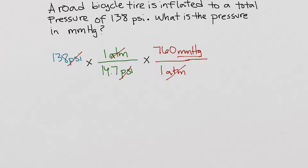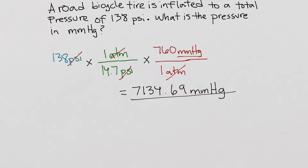Now let me do this calculation. I end up with 7134.69 millimeters mercury. There are different ways that an instructor will want you to write down this final value — it might just be a personal preference. Some would like it to stay like this, or some want it in scientific notation. If I leave this in three significant figures, I get 7.13 times 10 to the third, and those are my units.